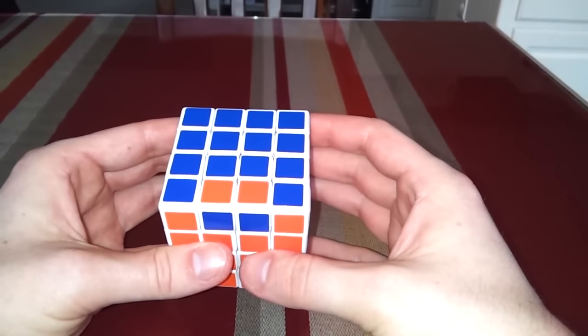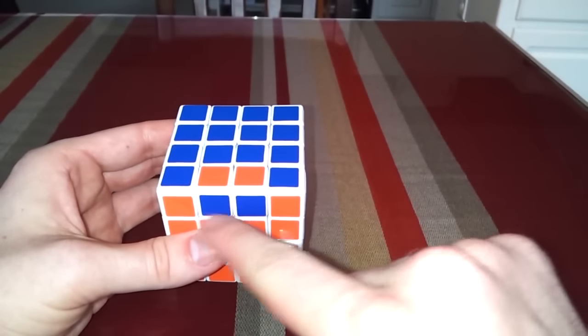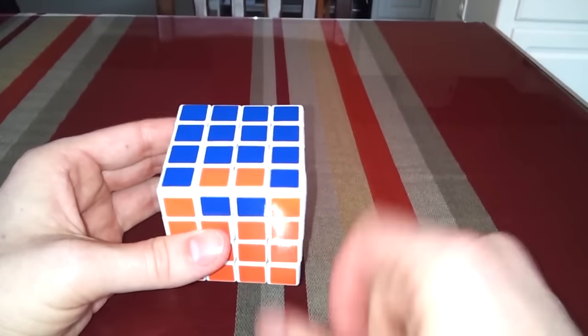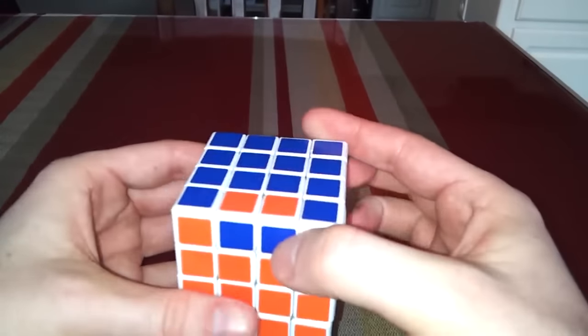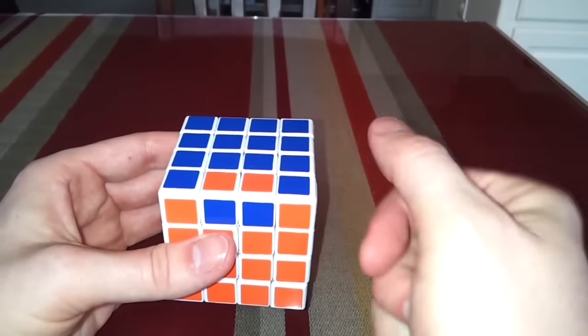If you're attempting to solve the 4x4 you inevitably come to this permutation that you don't see on the 3x3, where you have the entire cube solved except for one pair of edge pieces. The colors are flipped.